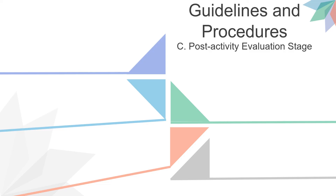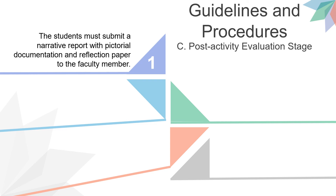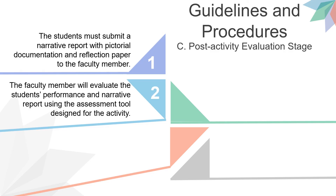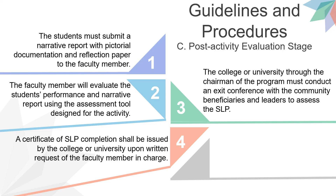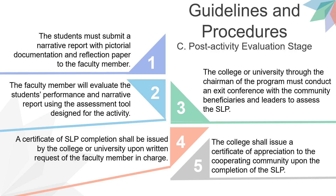In the post-activity evaluation stage: students must submit a narrative report with pictorial documentation and a reflection paper to the faculty member as proof and final output. The faculty member will evaluate the student's performance and narrative report using the assessment tool designed for the activity — guided by rubrics or criteria to ensure an objective assessment. The college or university through the chairman must conduct an exit conference with the community beneficiaries and leaders to assess the SLP. A certificate of SLP completion shall be issued upon written request of the faculty member in charge, and the college shall issue a certificate of appreciation to the cooperating community upon completion.